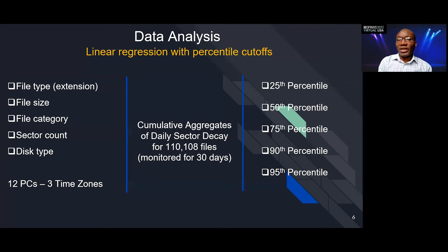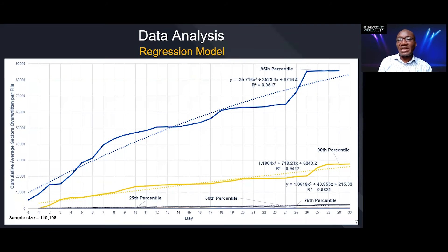The number of files were 110,108, and we monitored them for 30 days. We use this data that we collected to build a linear regression model, and we use different thresholds. We looked at the regression for 25%, we looked at the regression also for 50%, and 75%, and 95%. I wanted to see how 95% of the files were decaying, as well as 90% of the files, 75% of the files, and 50% of the files. This helps us have a better view of what's going on, as compared to just having one regression model to see how everything is going.